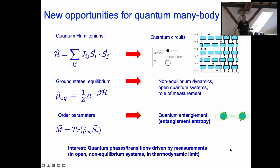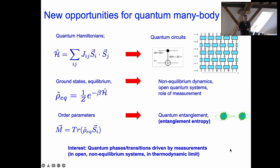In quantum many-body theory — and I'm a quantum many-body theorist by career — we typically look at Hamiltonians. At least in the digital quantum simulators, one would be looking instead at quantum circuits with unitary gates coupling together the qubits. In many-body theory for electrons and spins in crystalline solids, one would be looking at ground states or very low temperature states — traditionally, thermal equilibrium states. What I'll be talking about is very much non-equilibrium dynamics, and in particular open quantum systems focusing on the role of measurements.